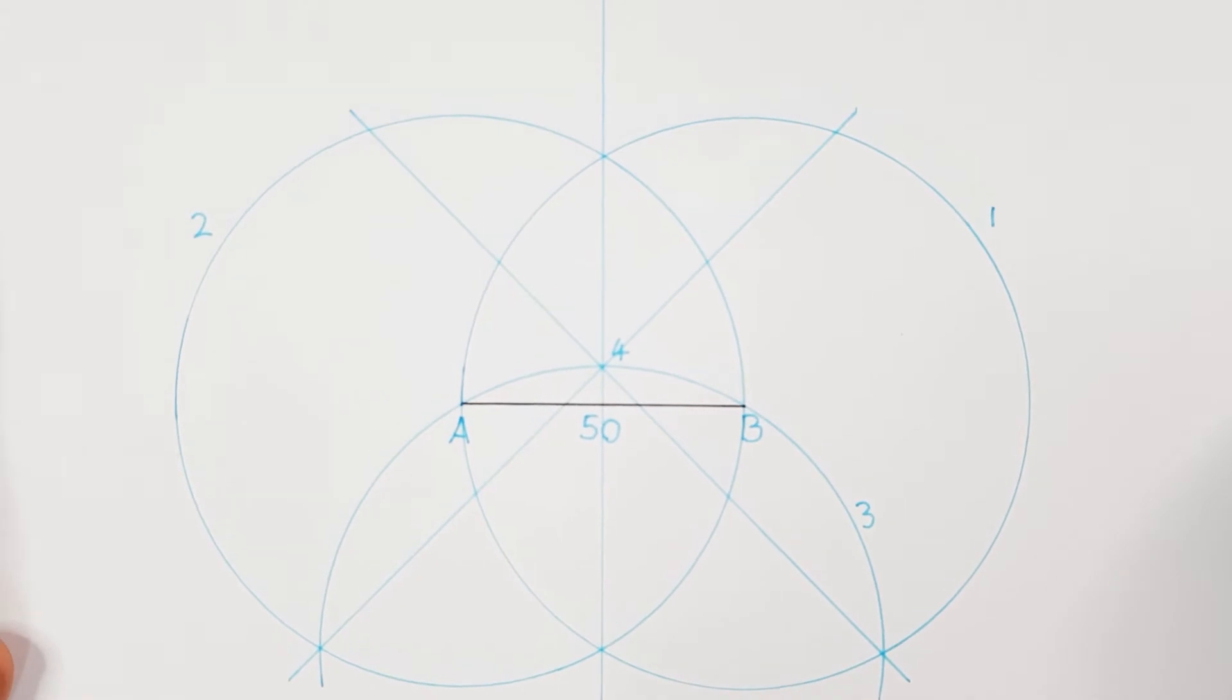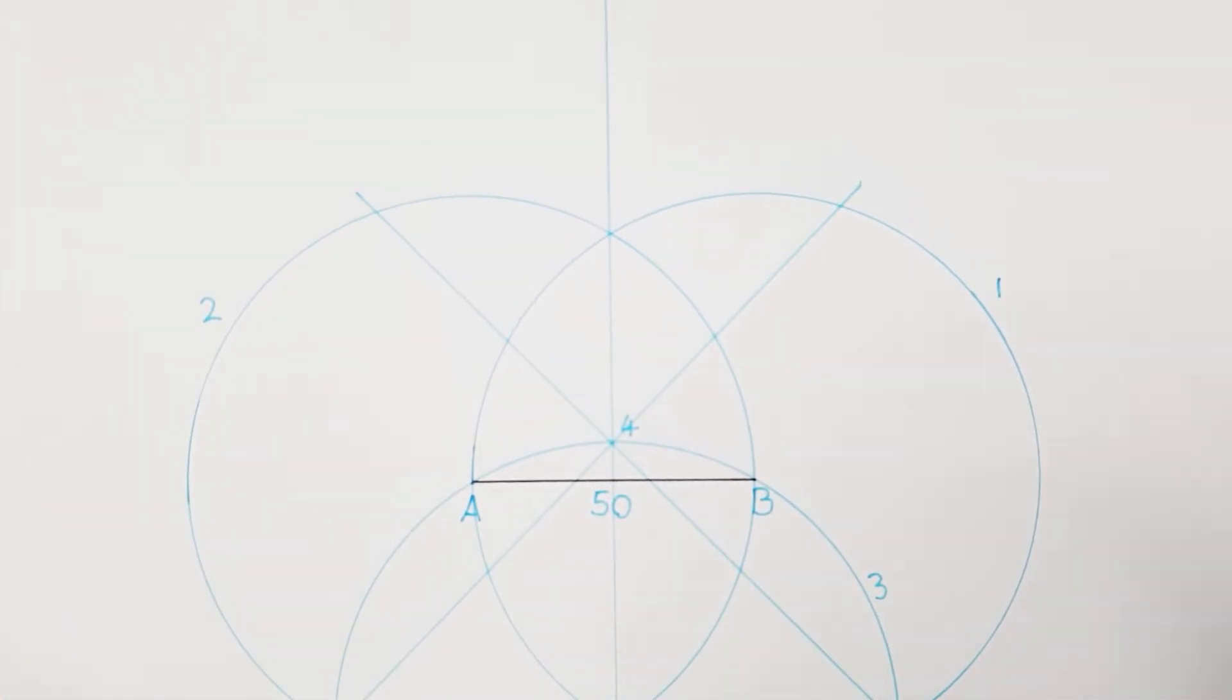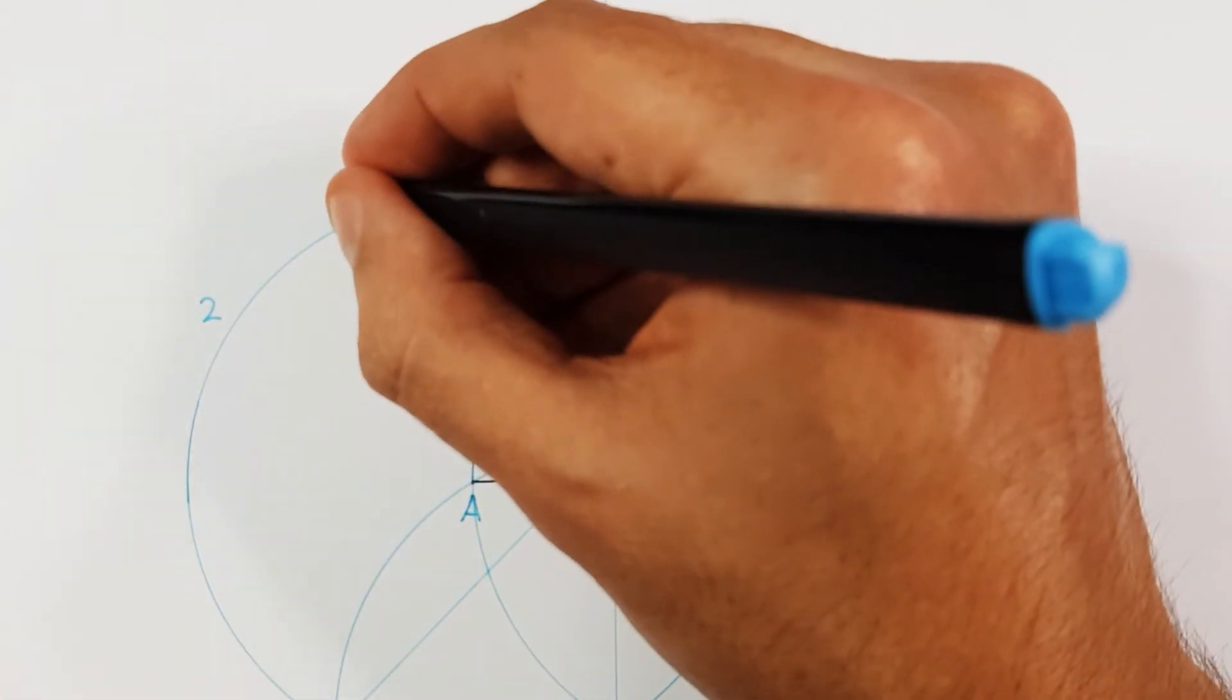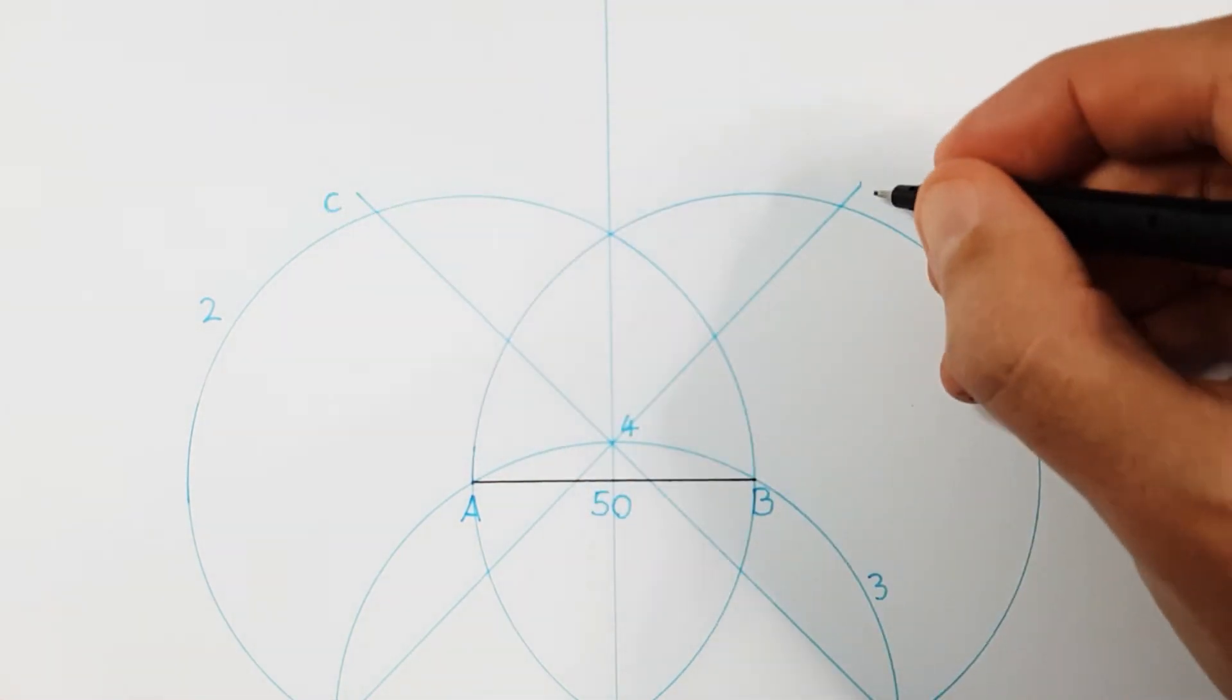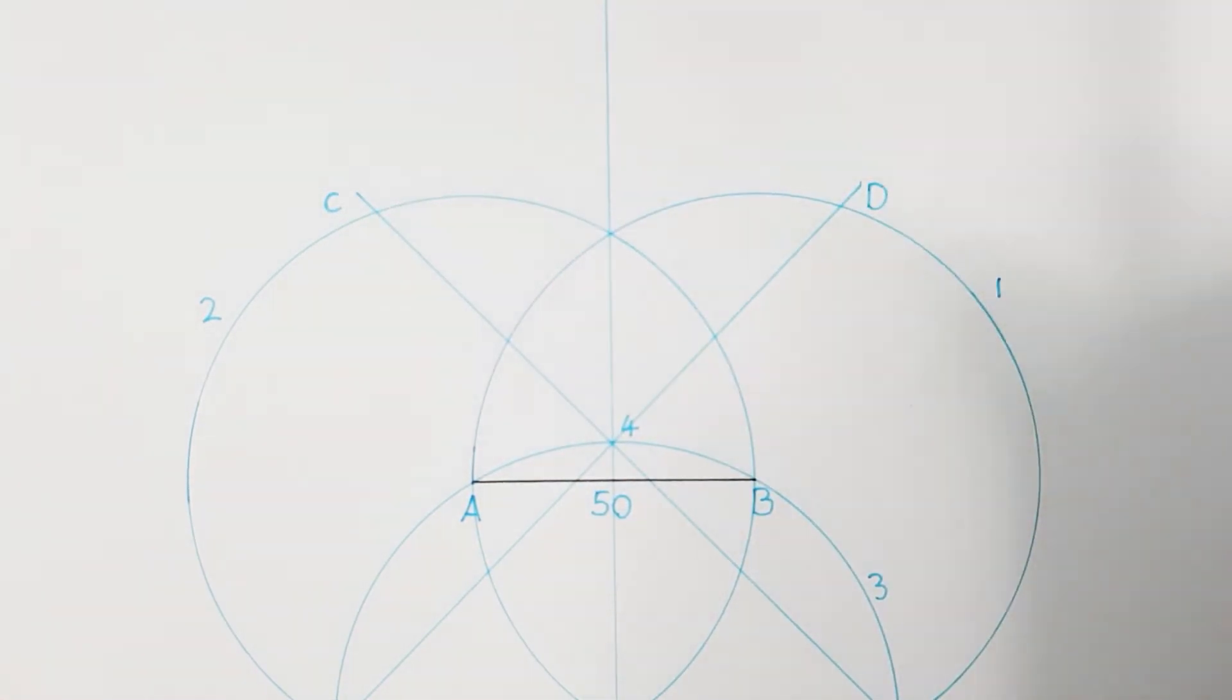You can then go and label these two sectioning points as C and D. Use these two sectioning points to then complete two of your sides of your pentagon.